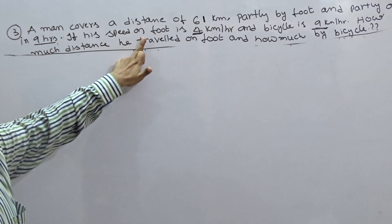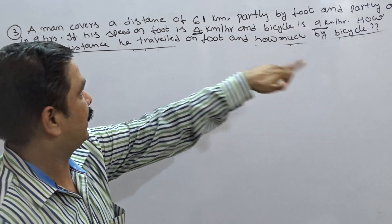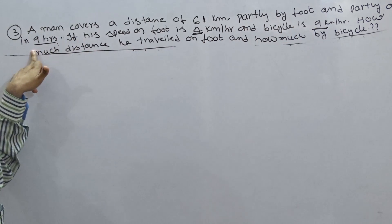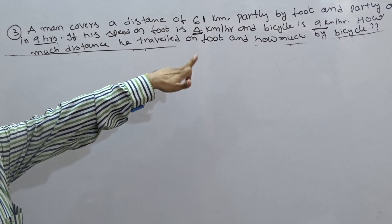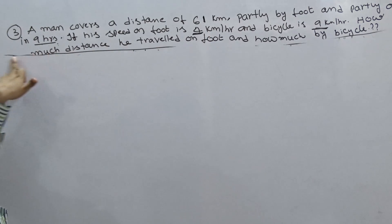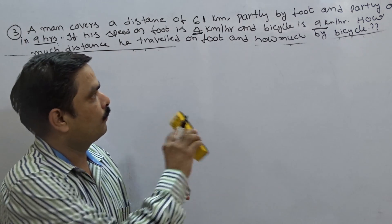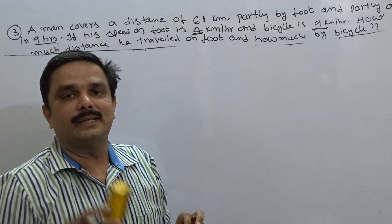The question is: A man covers a distance of 61 kilometers partly by foot and partly by bicycle in 9 hours. Speed on foot is 4 kilometers per hour and bicycle is 9 kilometers per hour. How much distance he traveled on foot and how much by bicycle is the question.